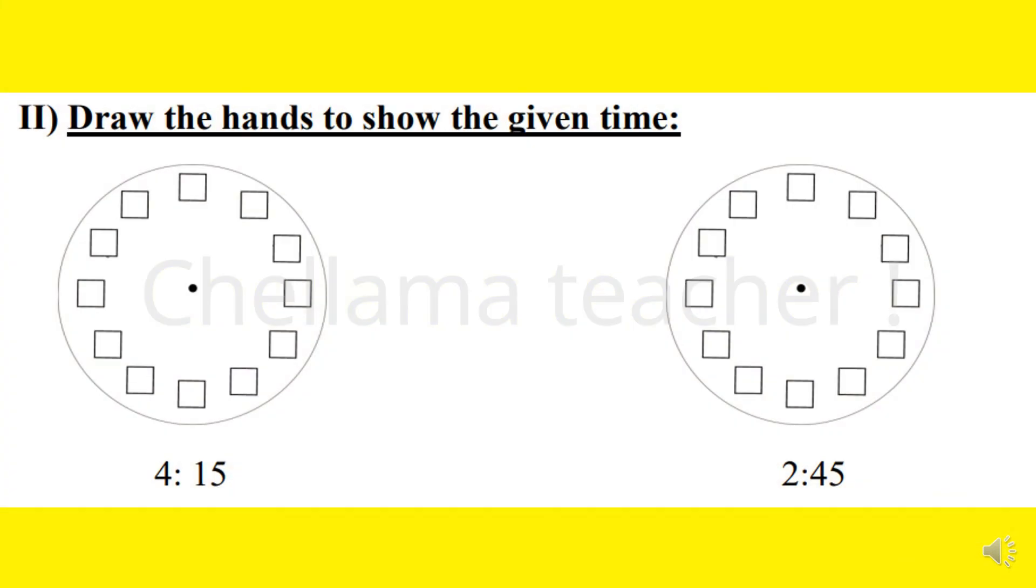Question number 2: Draw the hands to show the given time. Here 2 clock pictures are given. Timing is also given. What we have to do is write the numbers and then show the position of the hands in both the clocks.